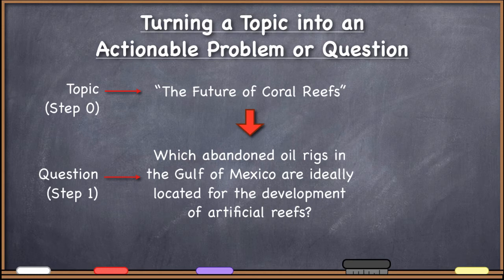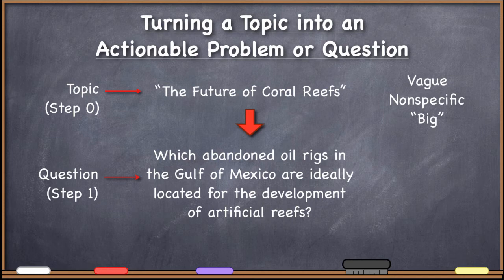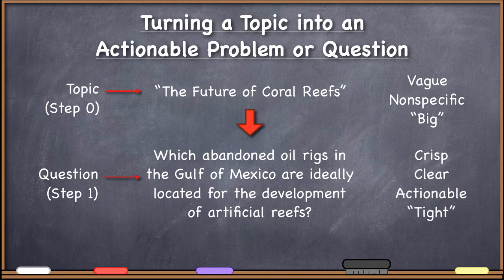The future of coral reefs as a topic I would describe as vague, non-specific, very big. If those words describe what you're trying to do, it may be a big hint that you have a topic, not a step one crisp, clear question or problem. On the other hand, I would use words like crisp, clear, actionable, tight to describe the question about abandoned oil rigs in the Gulf of Mexico — and that went on to be an absolutely incredible project. The future of coral reefs had a theme, a methodology (GIS, since it was a GIS class), and a very broad location — the entire world.